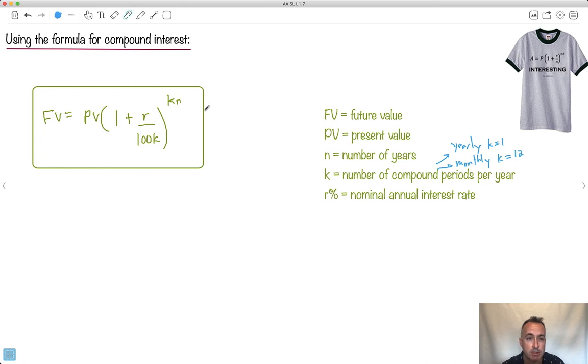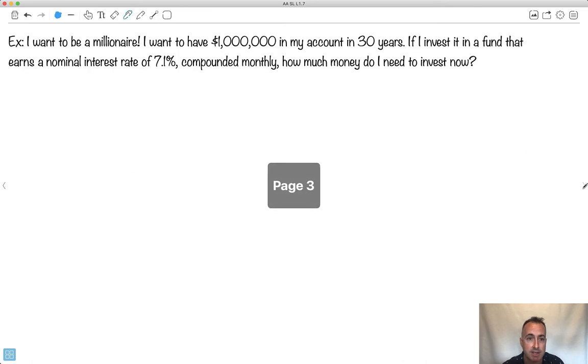N is the number of years. And away you go. You just calculate. So this right here can be done either by hand or with a calculator. Very often you're allowed a calculator for this. But let's just see then an example and see if we can do this. So let's say, I want to be a millionaire. So I want to have a million dollars in my account in 30 years. So I invest it in a fund that earned a nominal annual interest rate of 7.1%, compounded monthly.